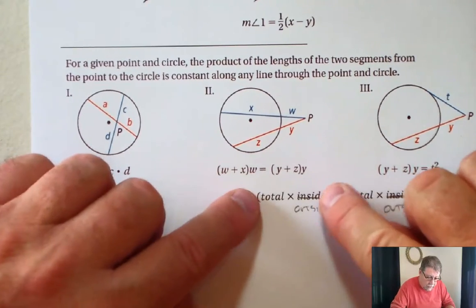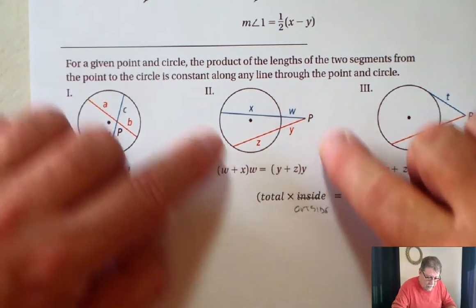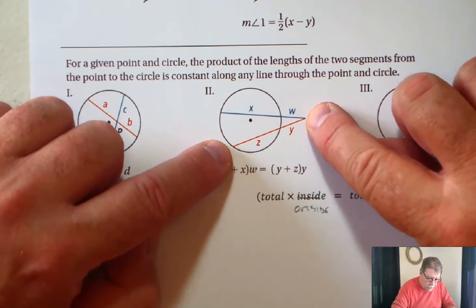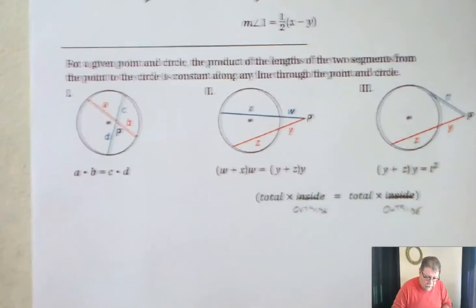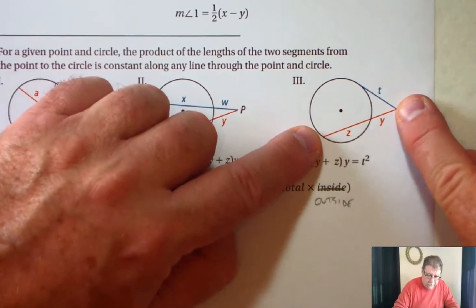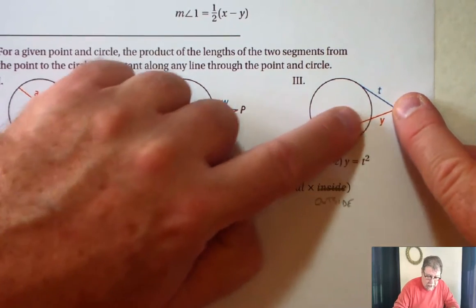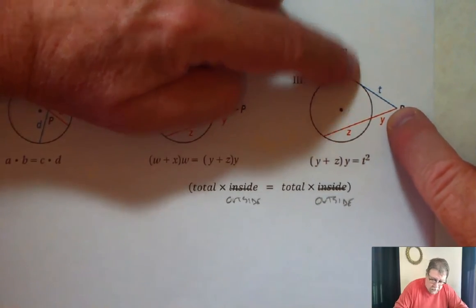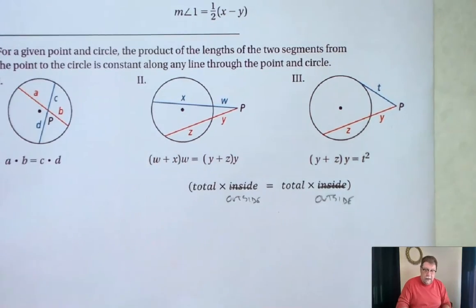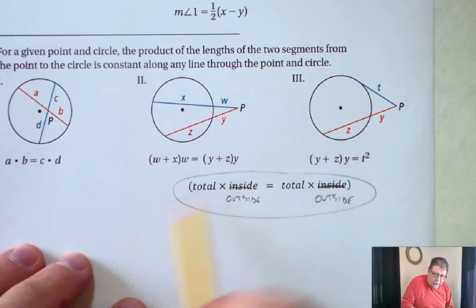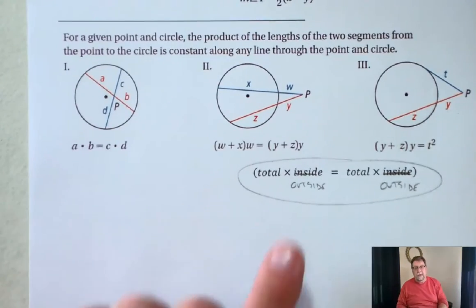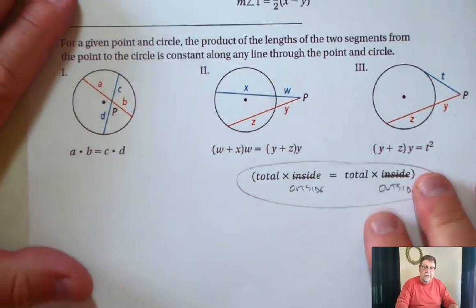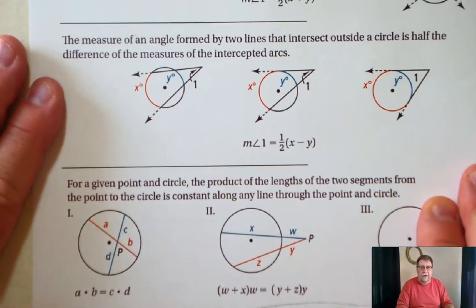So the total length times the outside, so X plus W times W is equal to Z plus Y times Y. That holds true here as well. Now, the total length, Z plus Y times Y. The total length is T, and the outside is also T. So that T squared holds true for this formula. So this is the formula I actually like to use for these particular notes. The total times the outside is equal to the total times the outside. So these notes are extremely important because there's a lot of formulas in here.